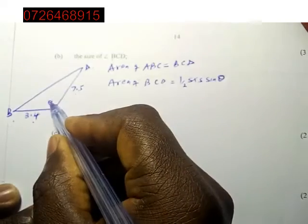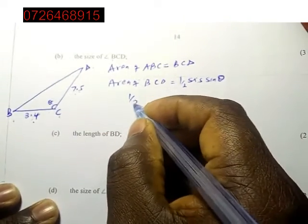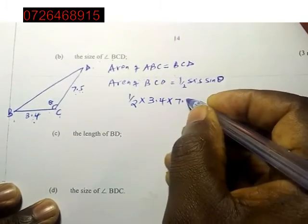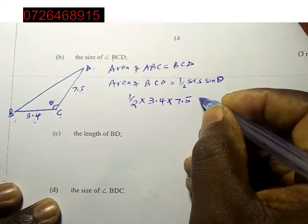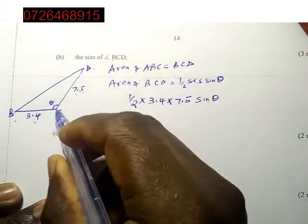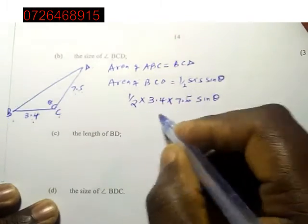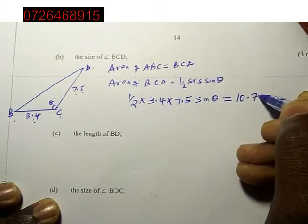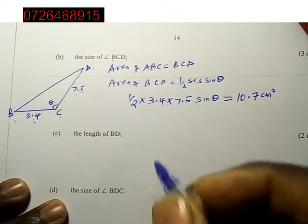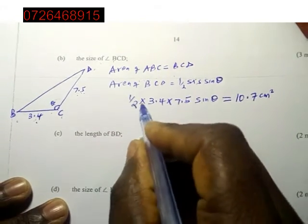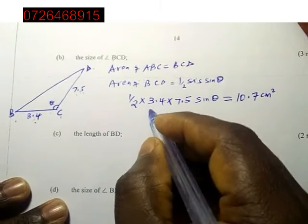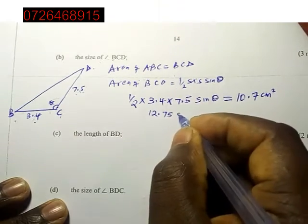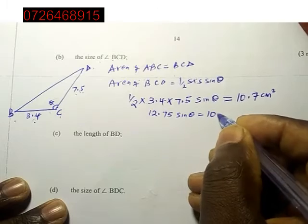Because this side, this side, and the angle between them. So area will be half times 3.4 times 7.5 sine theta. We don't have the theta here, this angle. But we know the area will be equal to the area of the other triangle ABC, which equals 10.7 cm squared. So we calculate everything here. Here we are going to have 12.75 sine theta equals 10.7.